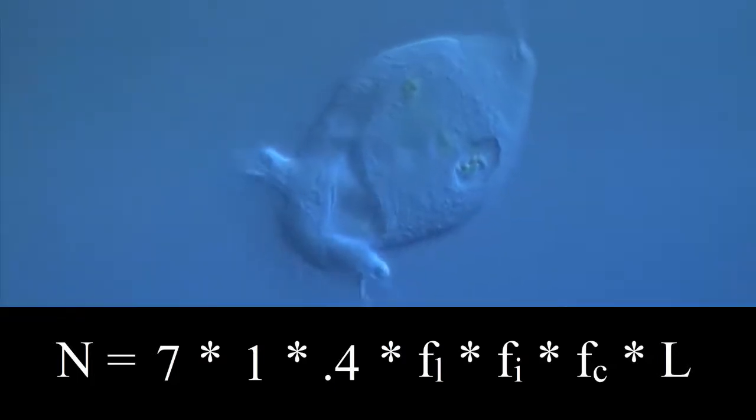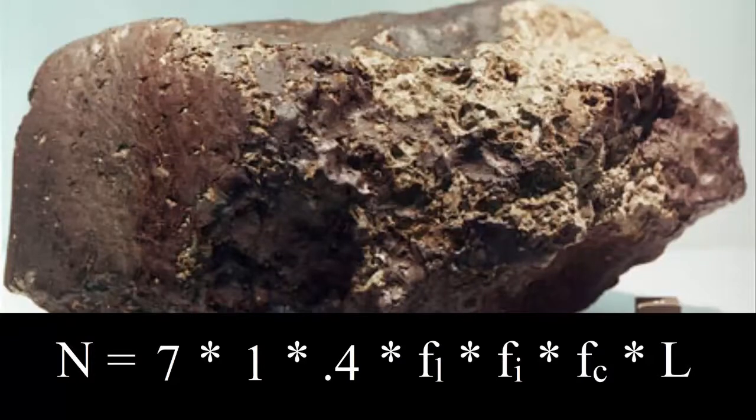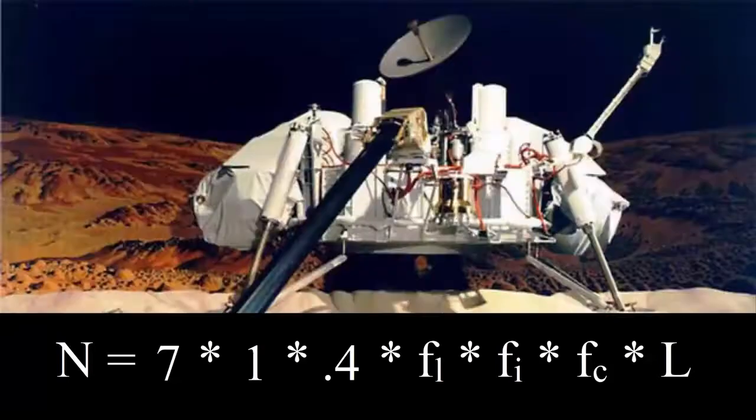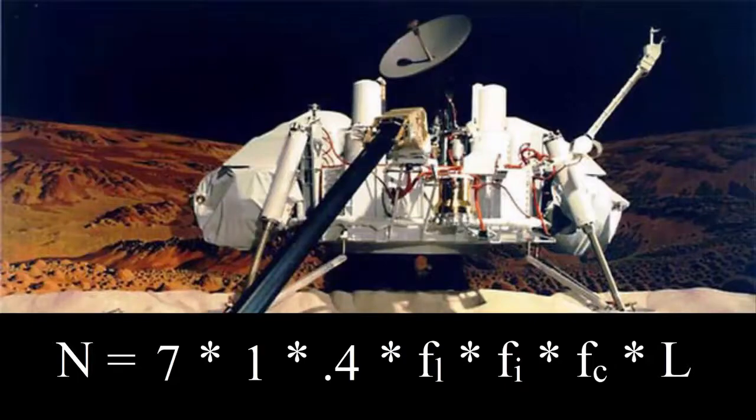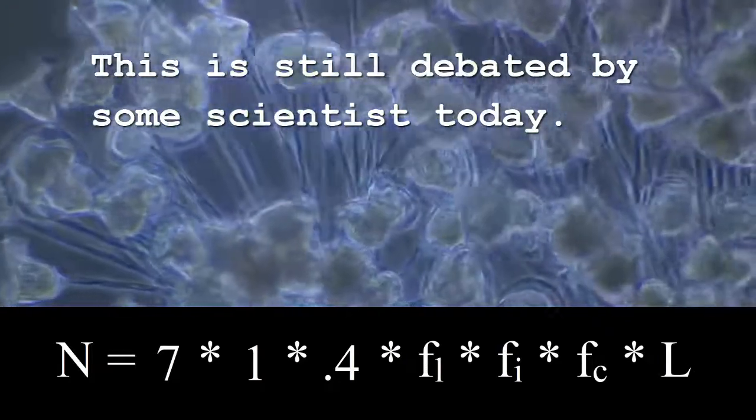The next part is FL, the fraction of habitable planets where life emerges. This part is hard to answer. There has been some sketchy evidence that life was once on Mars, such as the Martian meteorite that was found in Antarctica, ALH 84001, that some think shows ancient fossilized bacterial life. Or NASA's Viking lander mission in 1976, where one of the landers detected methane, but was later ruled a false positive.